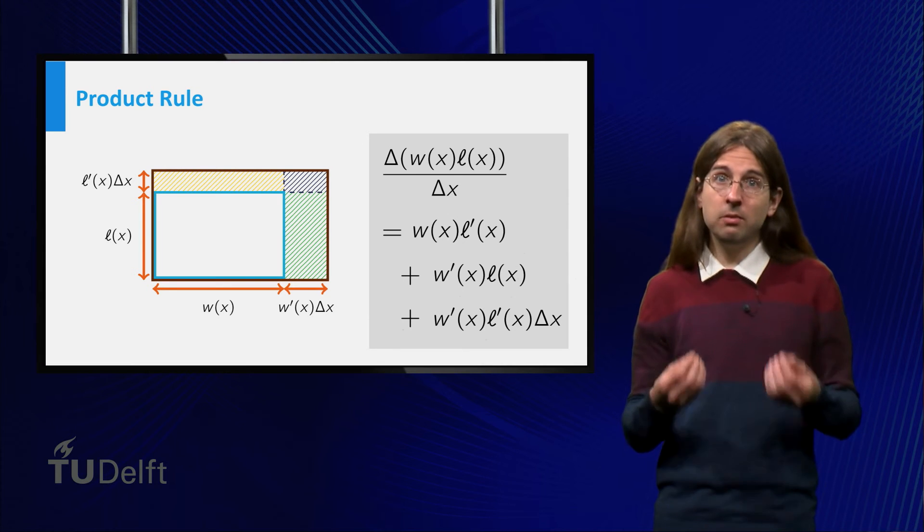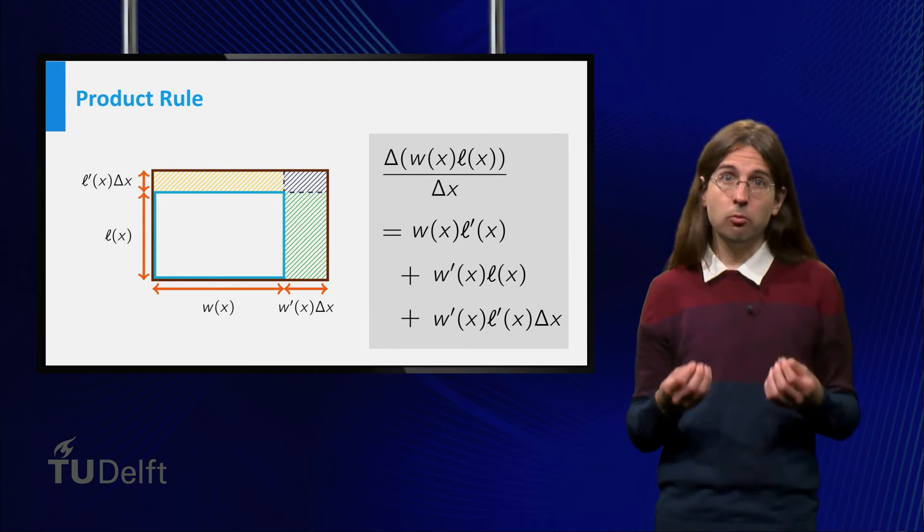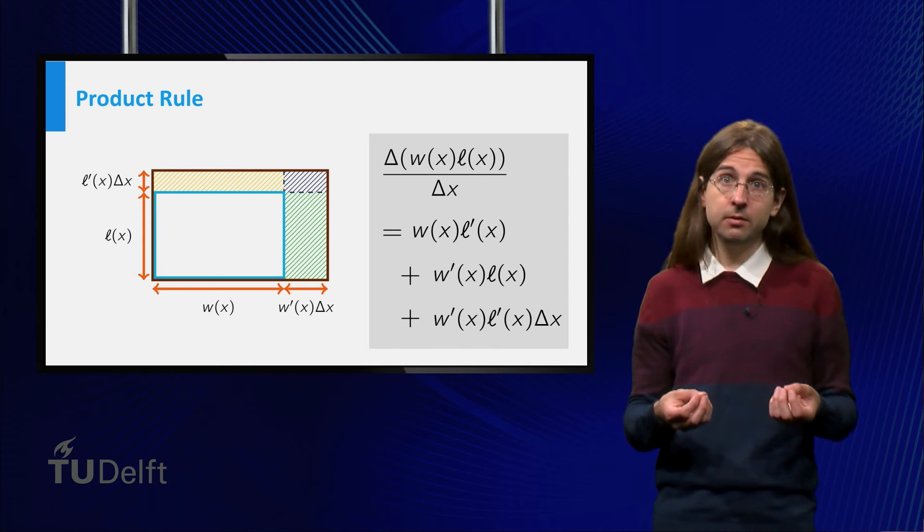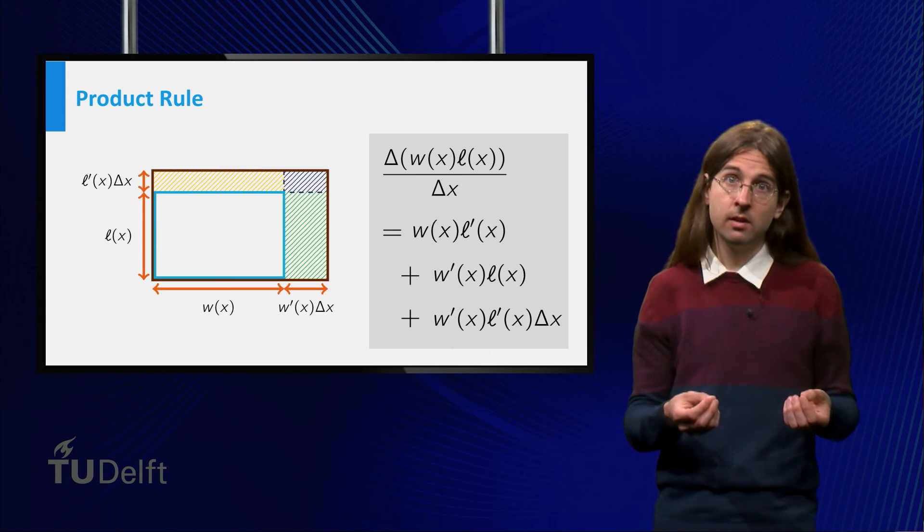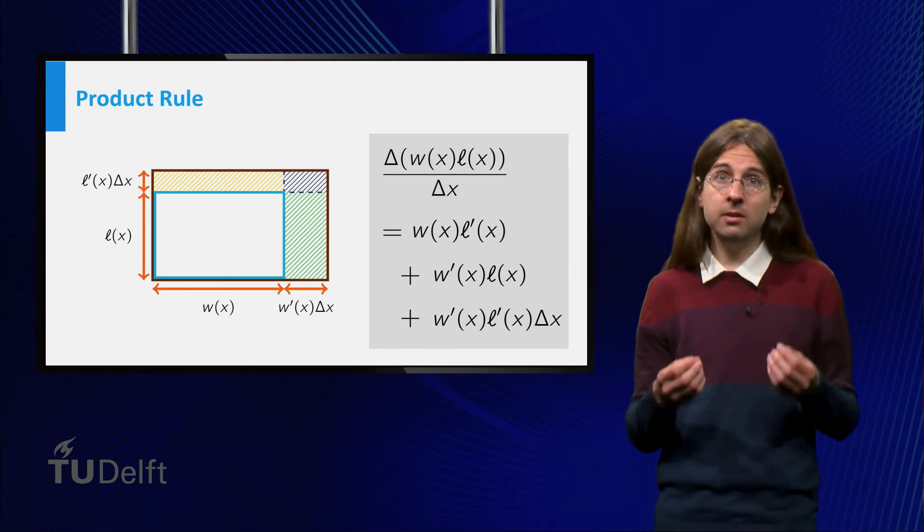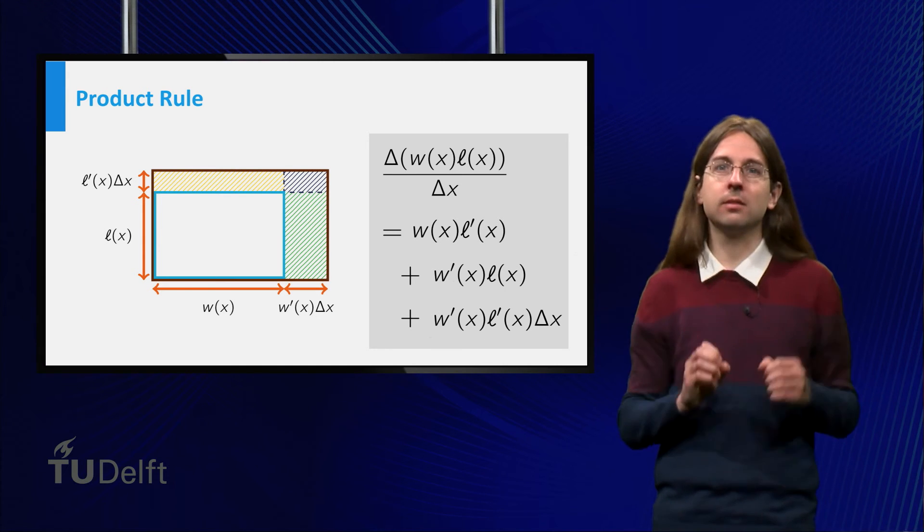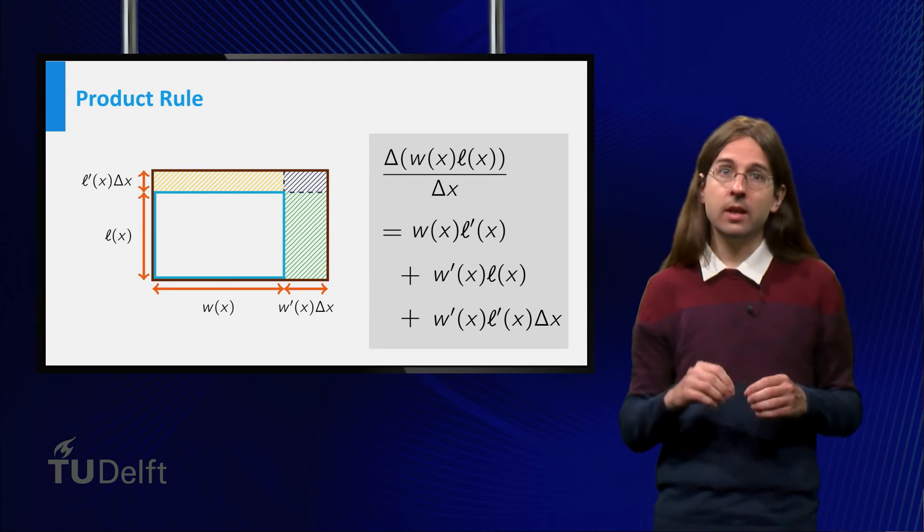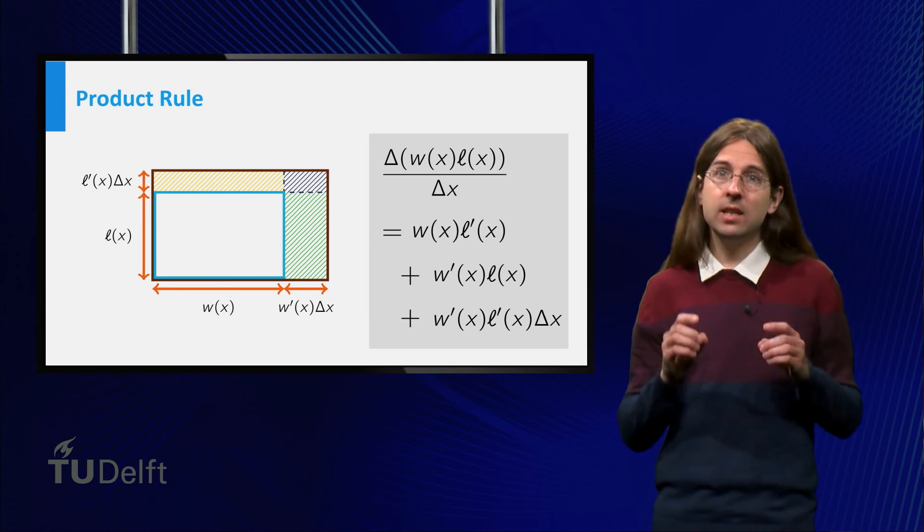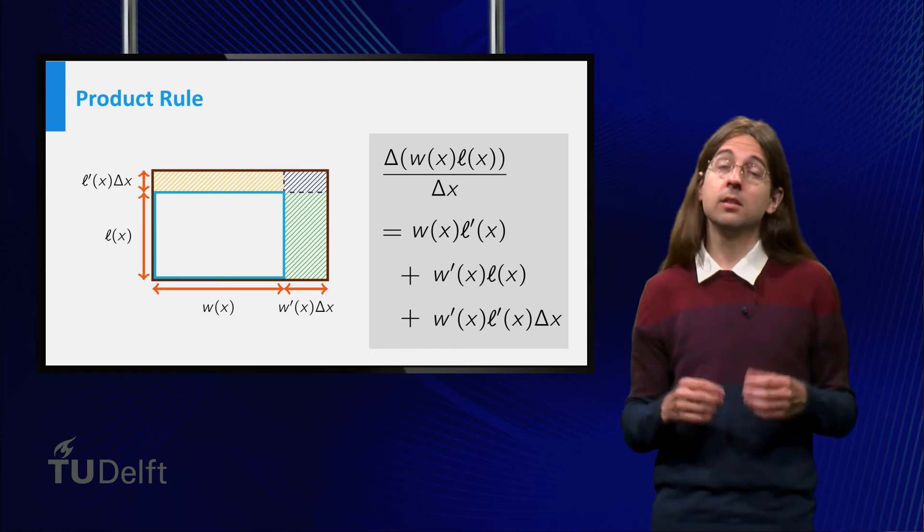If we now look at the rate, we see that the derivative of the area equals the width times the derivative of the length plus the length times the derivative of the width. The limit of the area of this small purple rectangle becomes small as delta x goes to zero, even after dividing this area by delta x.